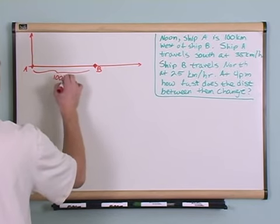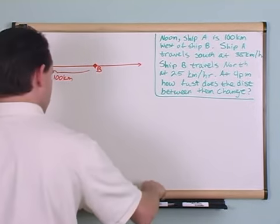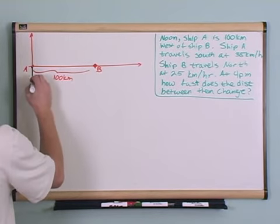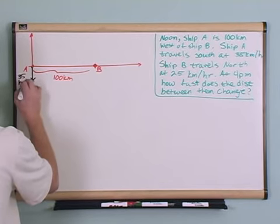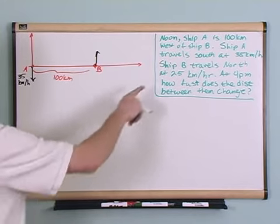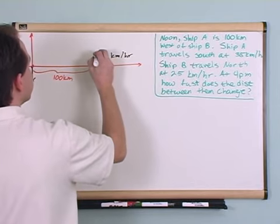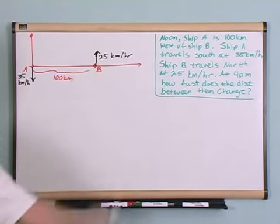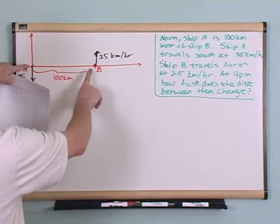So I'm going to draw a quick coordinate axes. At the origin I'll put ship A, and 100 kilometers away I'll put ship B — ship A is 100 kilometers west of ship B, so that distance is 100 km. Ship A goes south at 35 km/h — I'll draw that with an arrow — and ship B goes north at 25 km/h. At 4 PM, four hours later, how fast does the distance between them change?